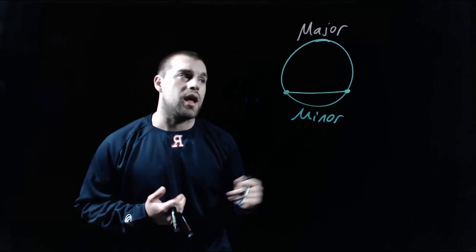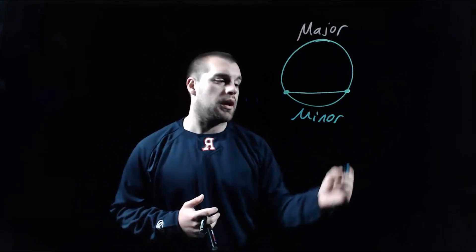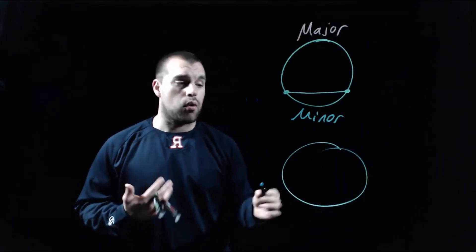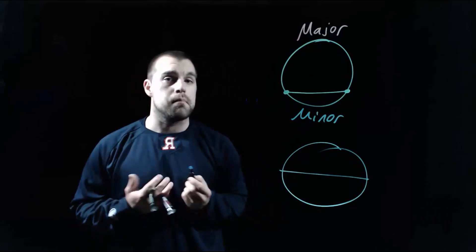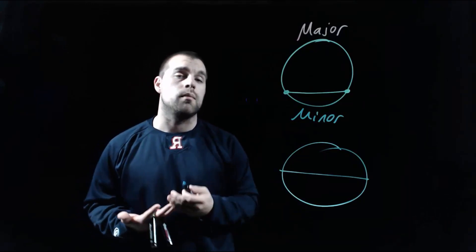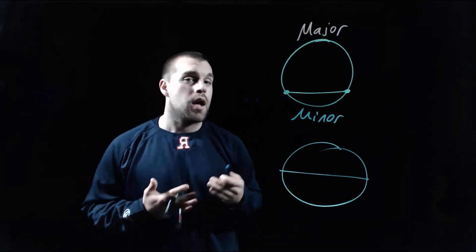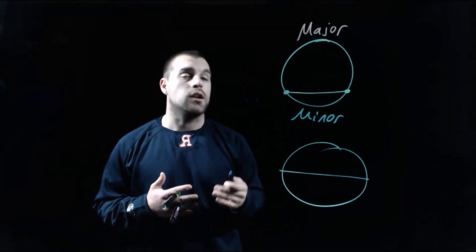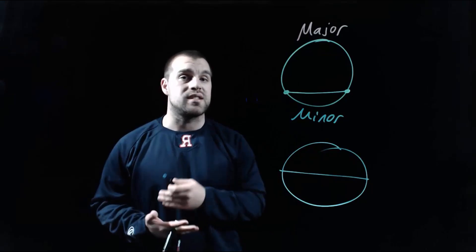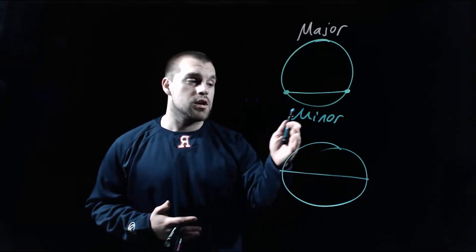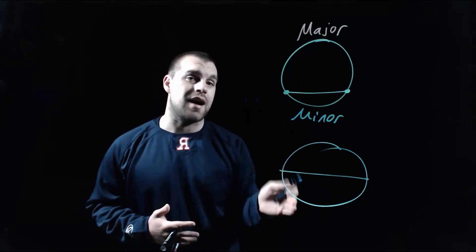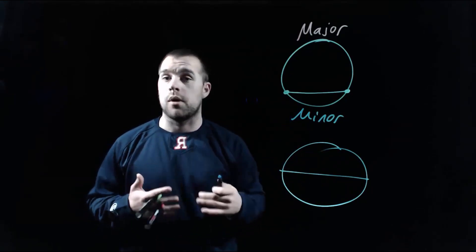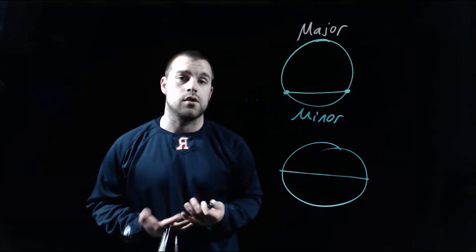One thing that could happen as we're looking at our circle is that chord could go directly through the middle of our circle — then it would be a diameter. A diameter splits a circle exactly in half and creates two semicircles, so the arc on top and on bottom are both semicircles because they're both half of the circle.